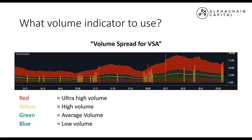Here is a good indicator I use and recommend you get into your TradingView — it's called the VSA volume spread indicator. It shows you the relative change in volume between bars, which is what we're interested in. We don't care about the absolute number; it's how volume changes between bars. You've got different colored bars: red is ultra-high volume, yellow is high volume, green is average, and blue is low volume. You'll find it at the bottom of your TradingView chart.